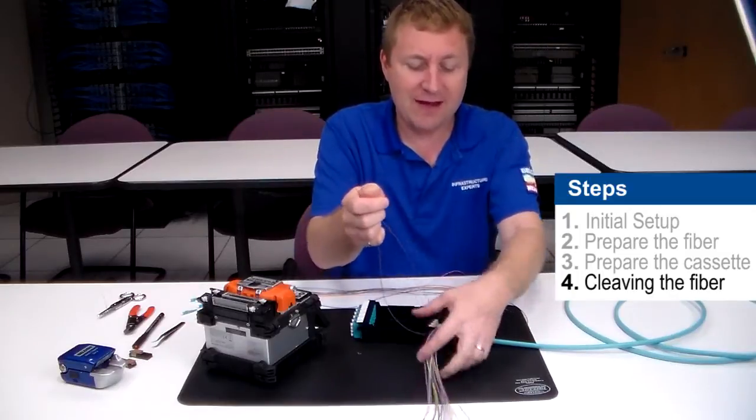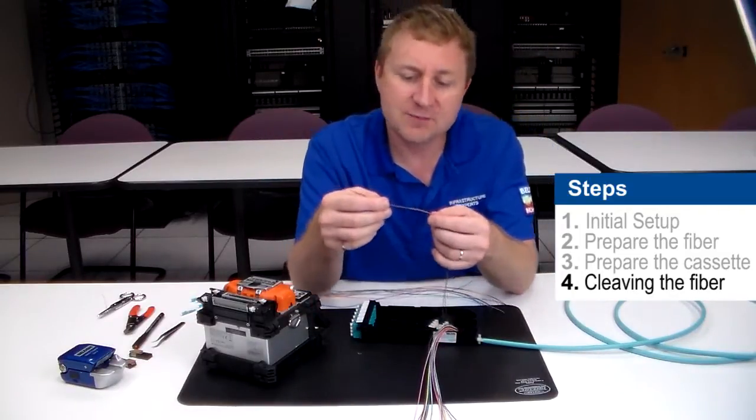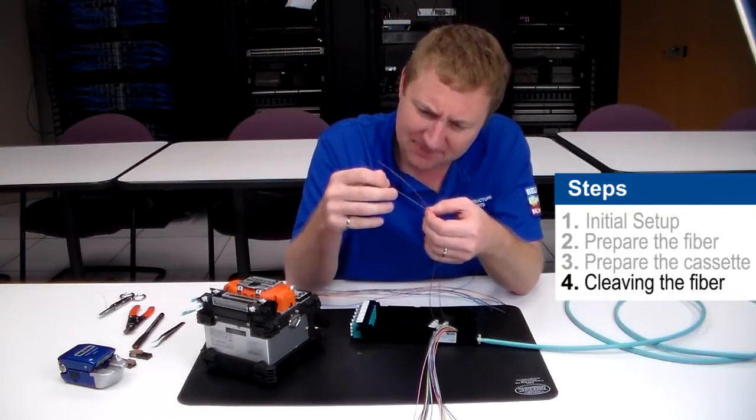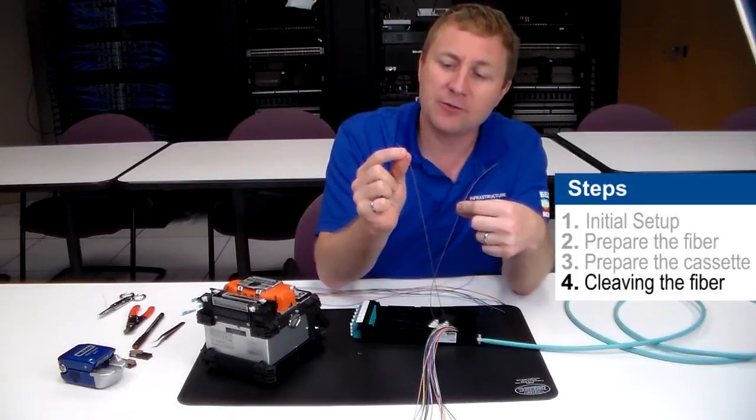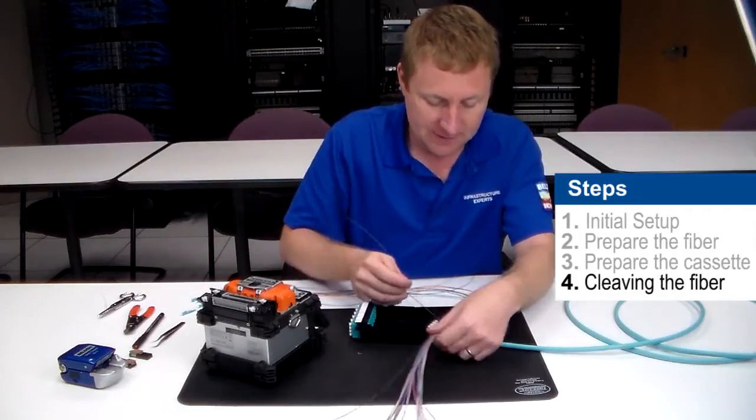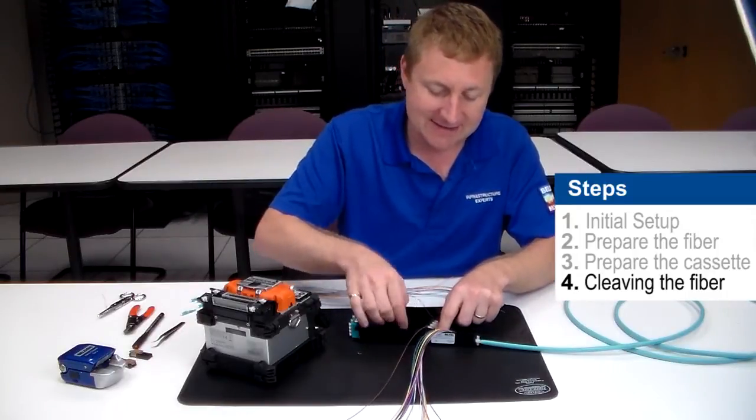Since this is a 24 fiber cable I have two brown fibers. One of these brown fibers has a stripe on it. So I want to make sure that I'm not starting with that one. The brown fiber with the stripe, that's for the second set of 12. So I'm going to take that first brown fiber and I'm just going to lay it inside my cassette.